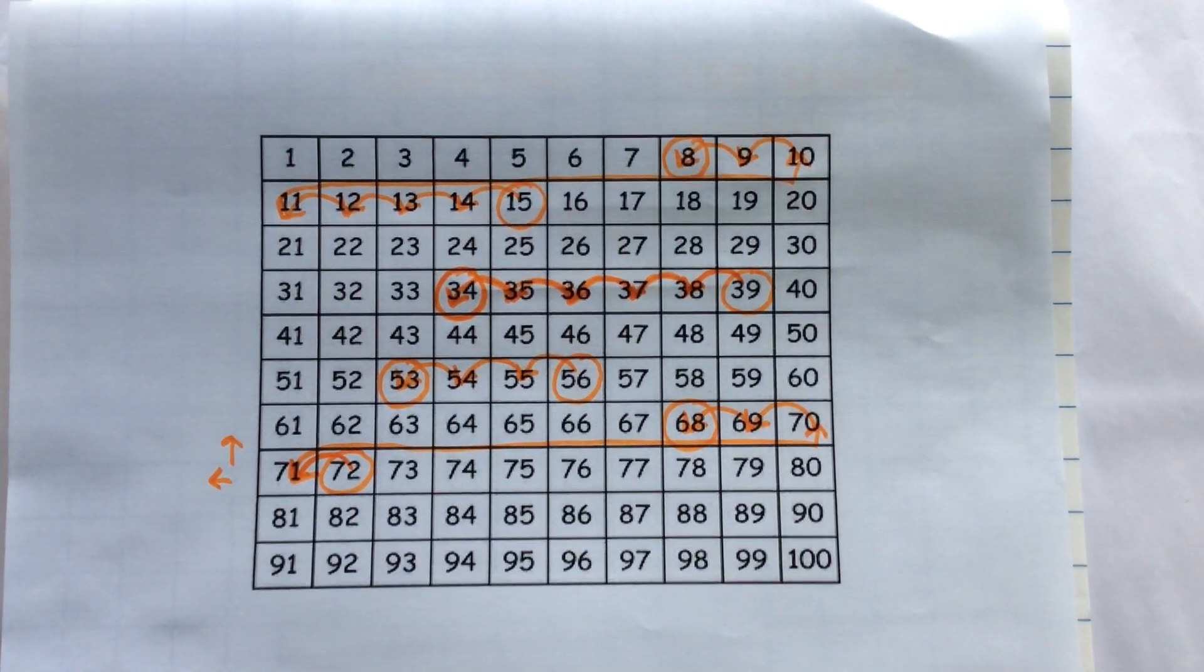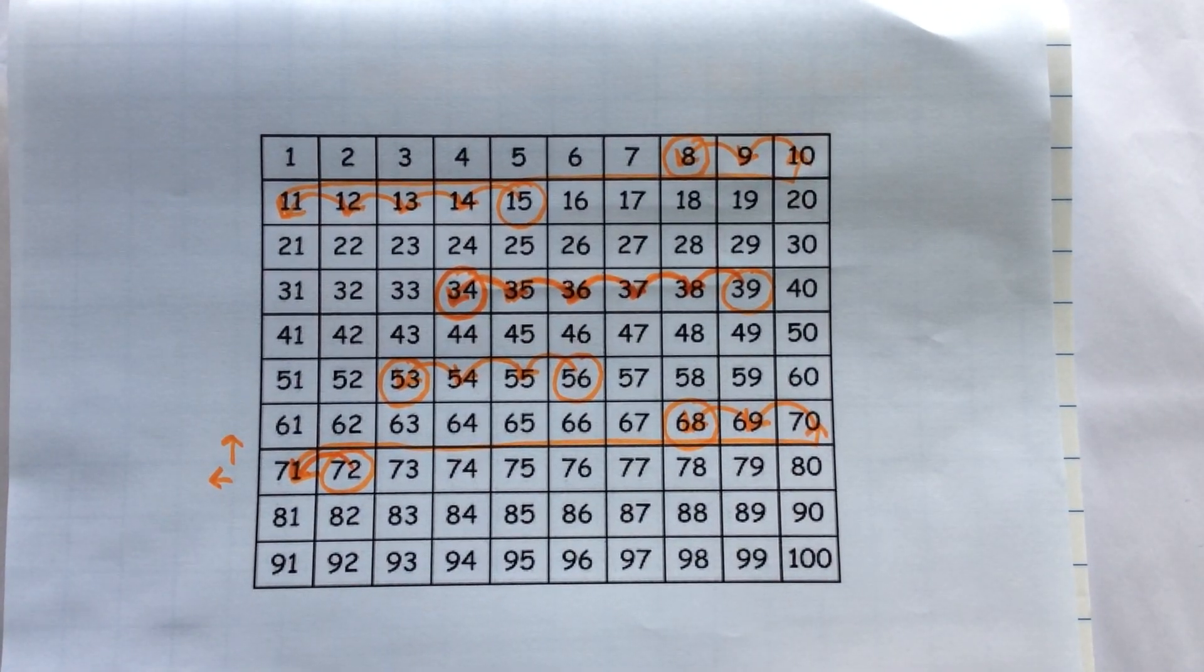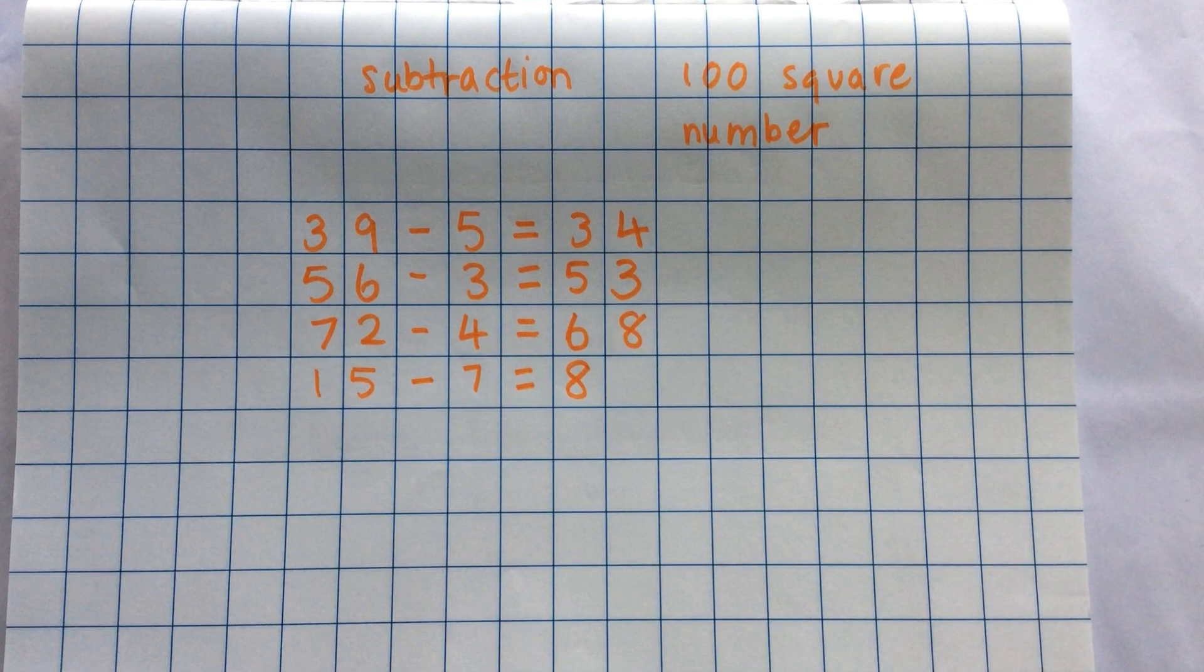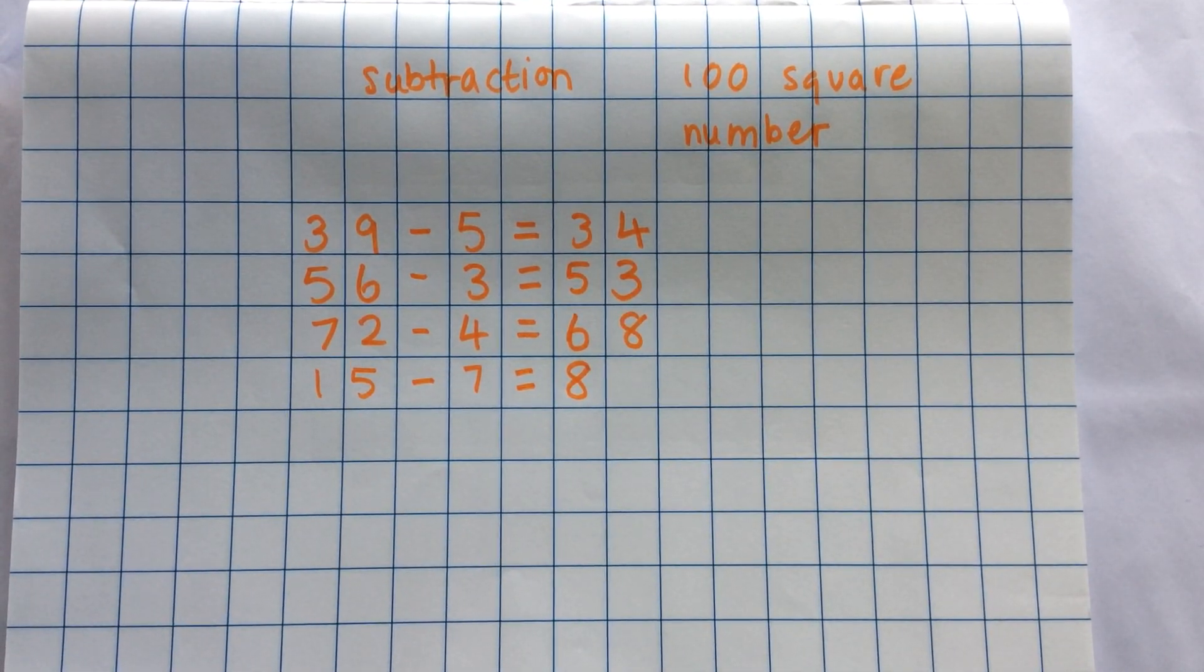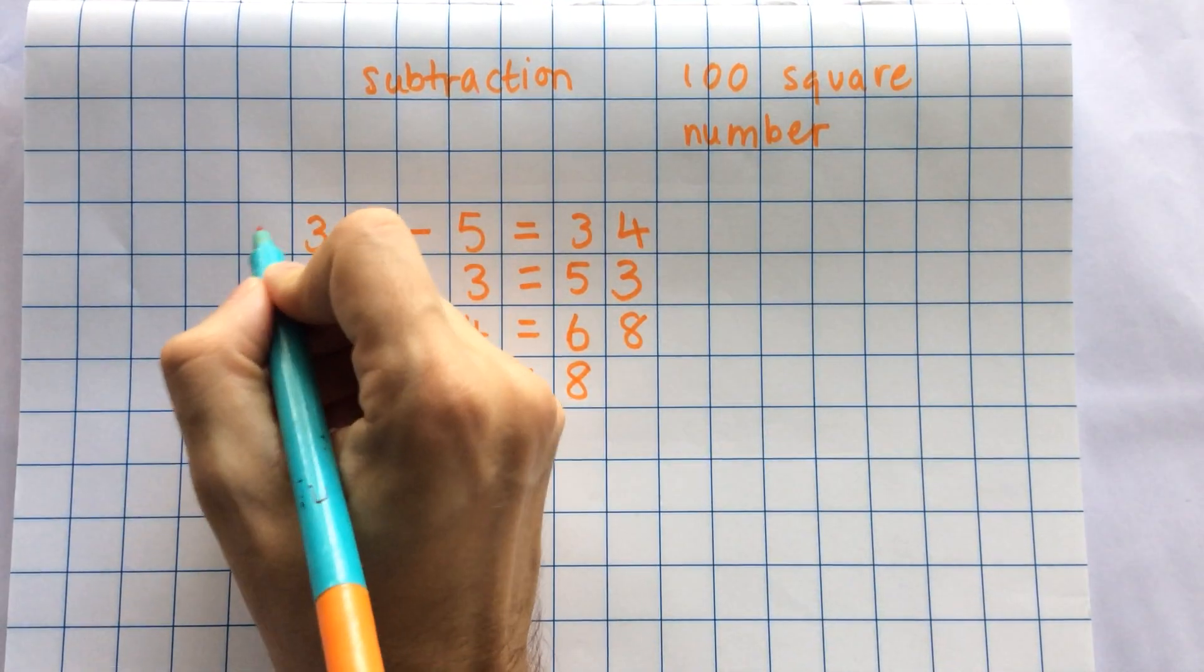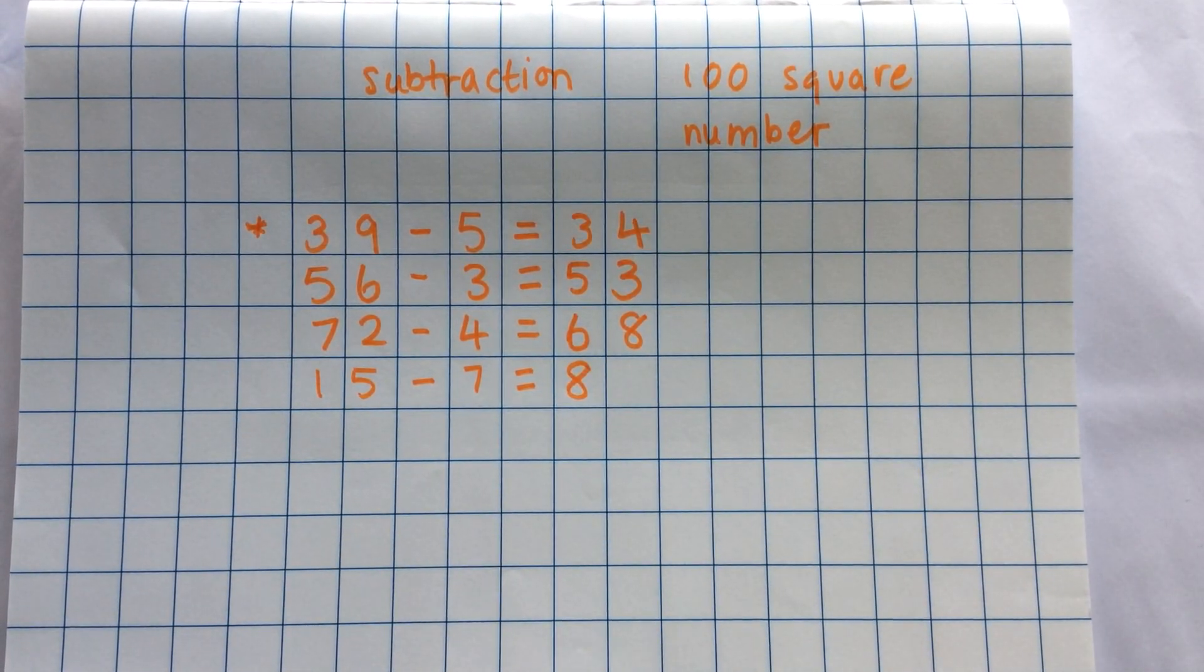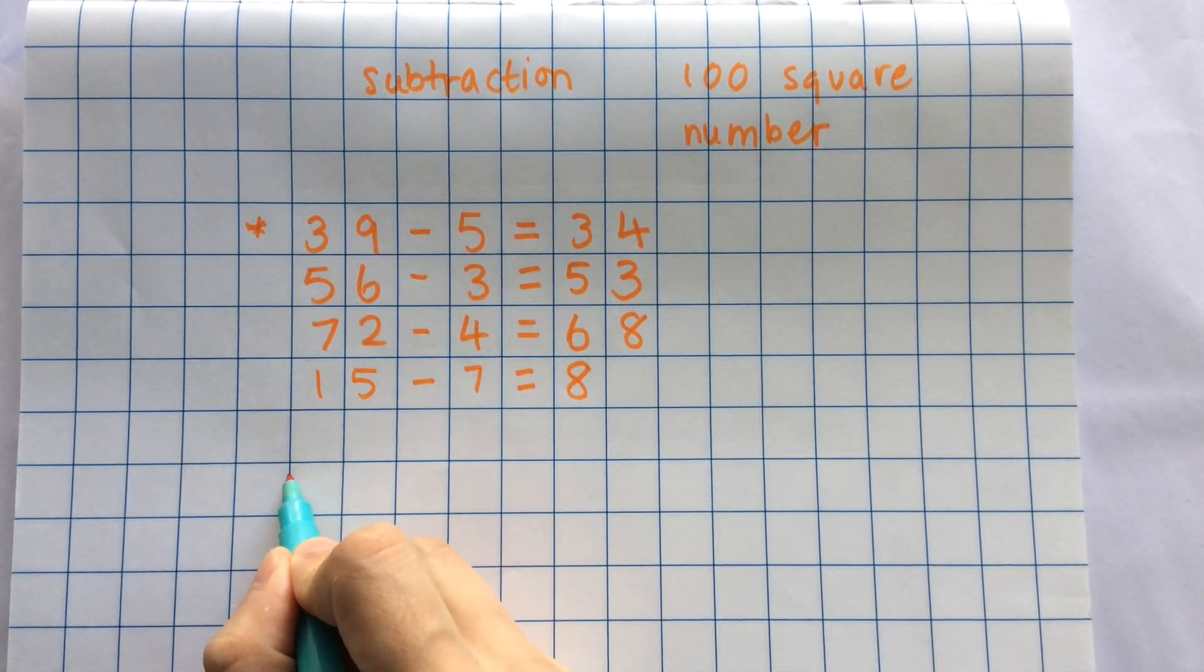Hundred squares are really good if you're not sure about the numbers that come before the numbers you're working with. If you do feel more confident with those, you could use a number line, which I'm going to show you now. I'm going to use the same numbers to make it nice and simple. So, let's start with 39 minus 5. On my paper, I draw my number line.